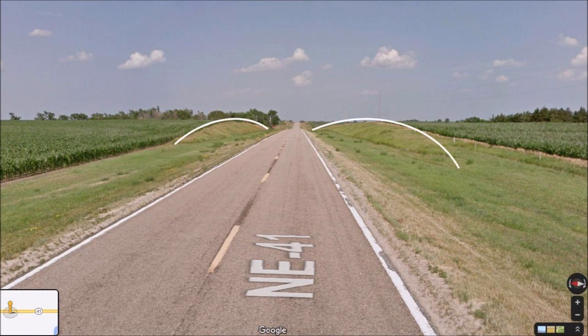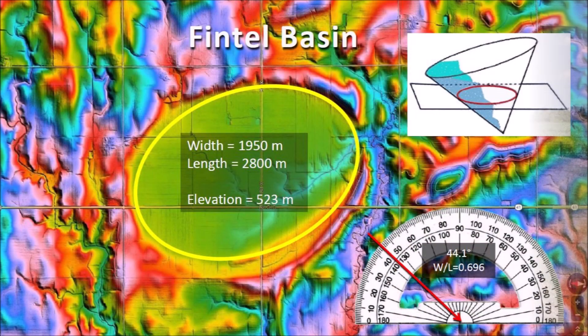When exploring the Carolina Bays, we have to become aware of these very subtle land features. Fintel Basin has a width of 1,950 meters and a length of 2,800 meters, and it is located 523 meters above sea level. The Nebraska Rainwater Basins are elliptical because they originated as inclined conical cavities. The width-to-length ratio of 0.696 corresponds to an impact angle of 44.1 degrees. Viscous relaxation reduced the depth of the cavities to create the shallow elliptical basins we see today.